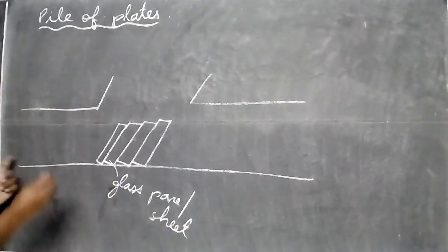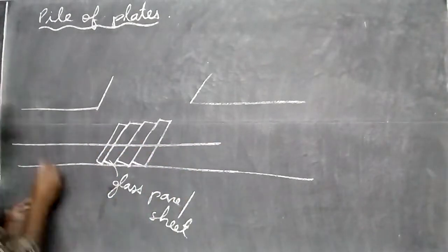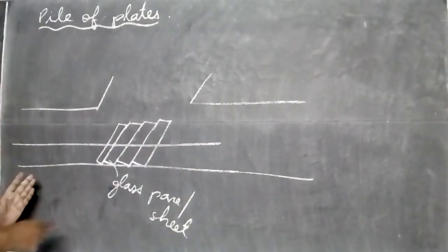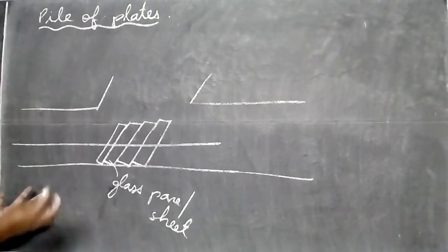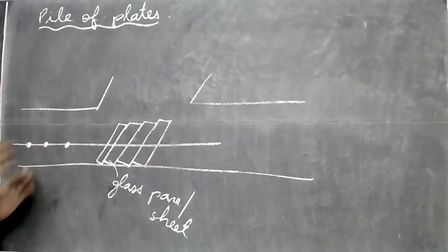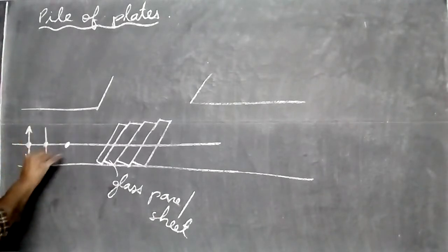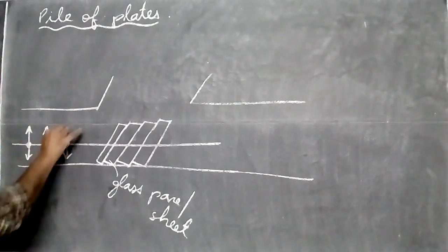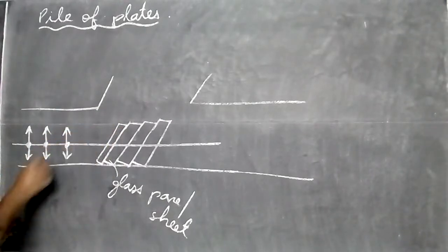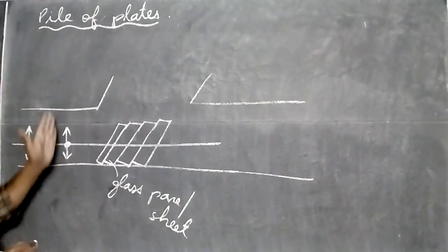Now what we do is send unpolarized light from the left side. Unpolarized light vibrates in all planes - it vibrates out of the board like this, and also vibrates perpendicular to this, so it has two ways of vibration.